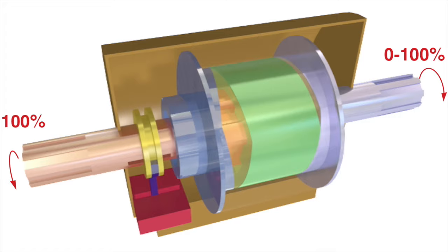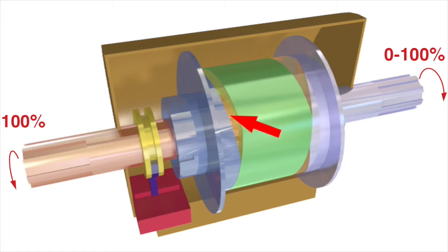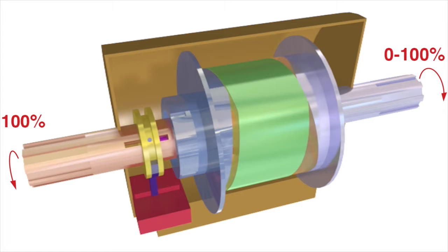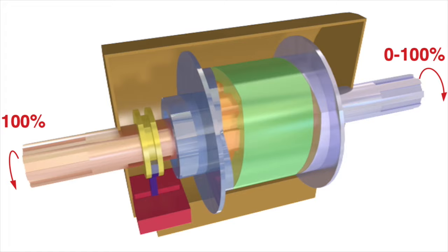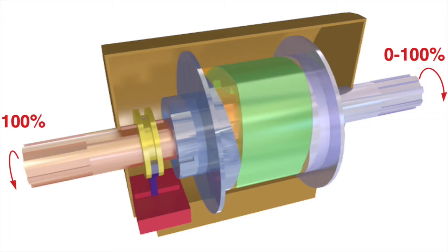The TEEN stepless reduction gearbox works by controlling the flow of hydraulic oil within two helical chambers. The transmission of power operates both mechanically and hydraulically, adjusted by controlling the flow of oil from one chamber to the other, allowing stepless adjustment of reduction ratios between 0 and 100 percent.